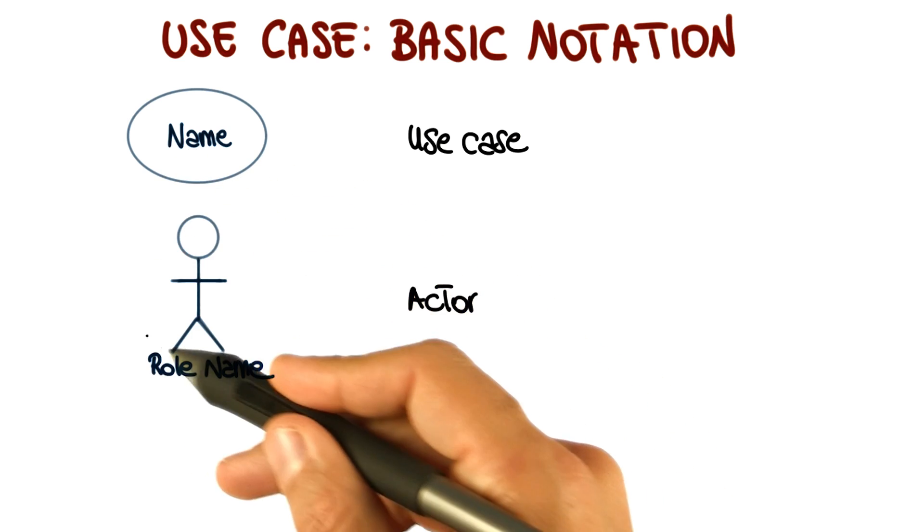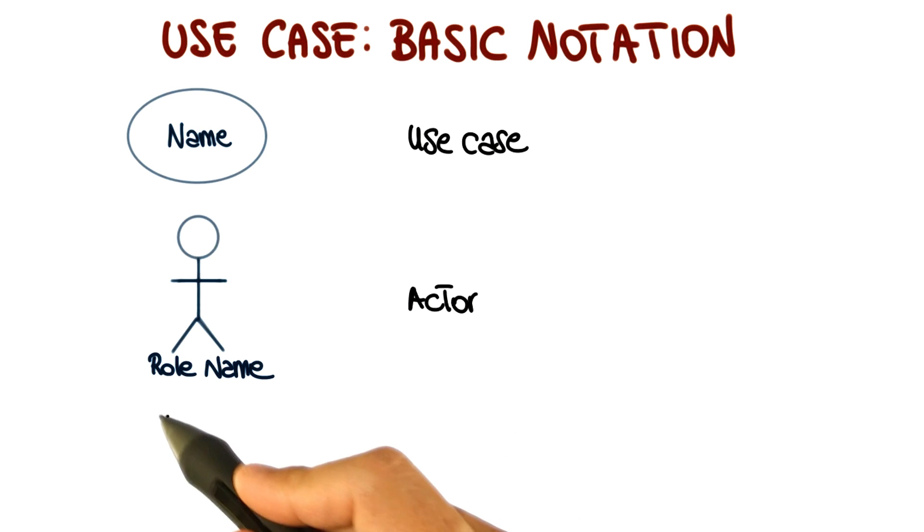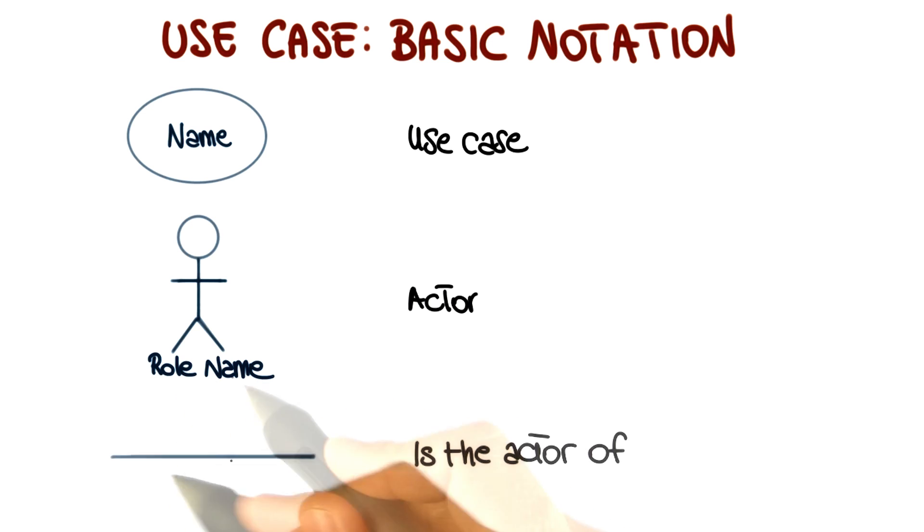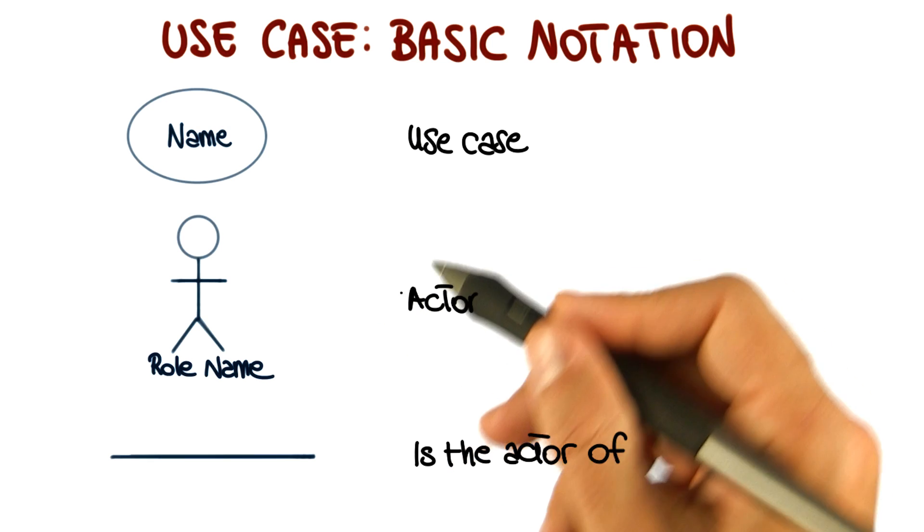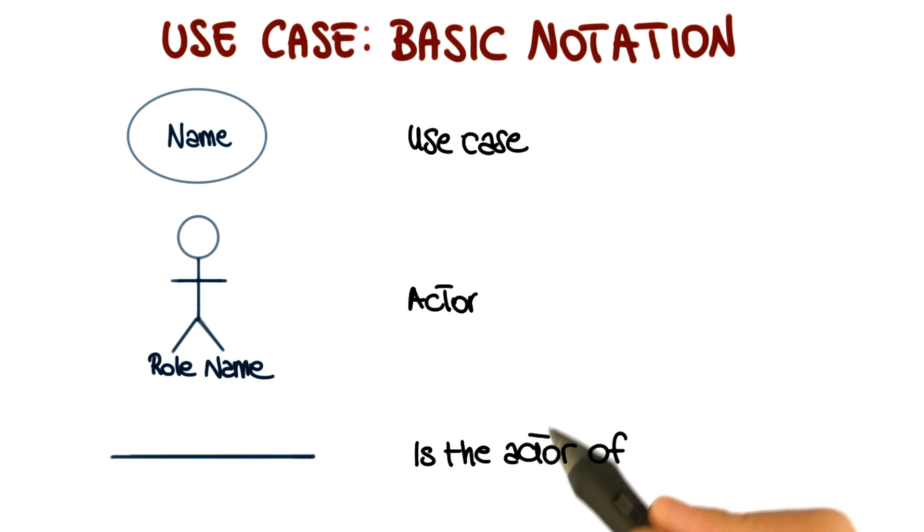We have an actor, which is represented by this icon, and is normally identified by a role name. And finally, we have an edge, which is a solid line that connects actors and use cases, and indicates that an actor is the actor of a given use case.